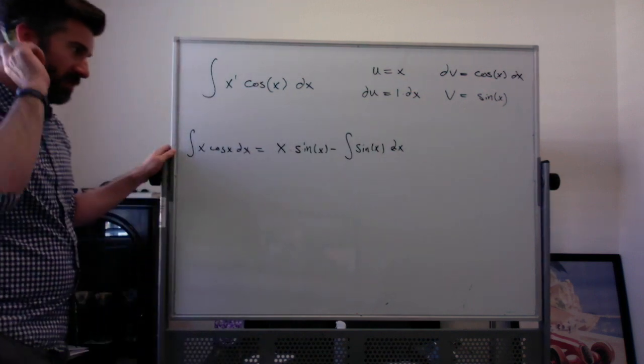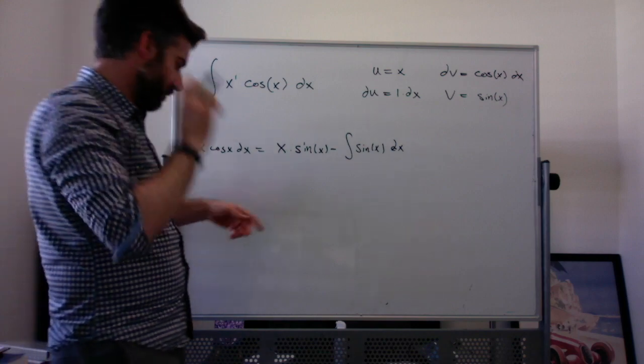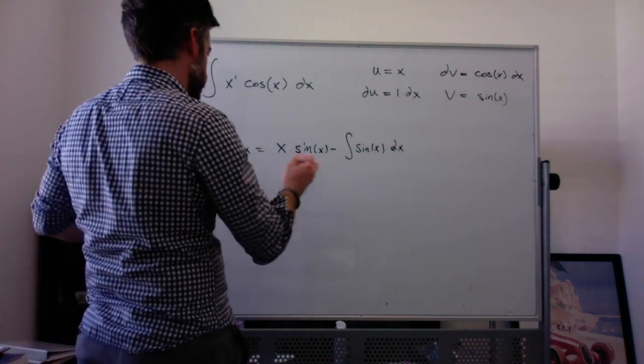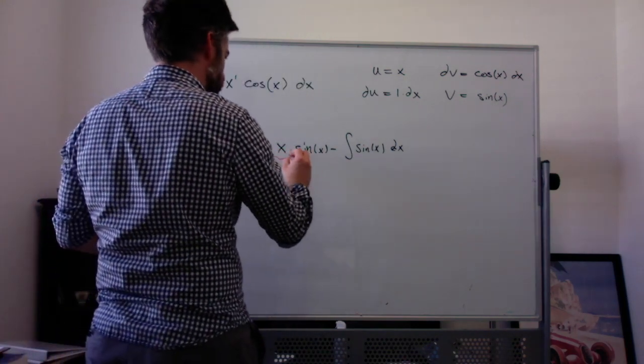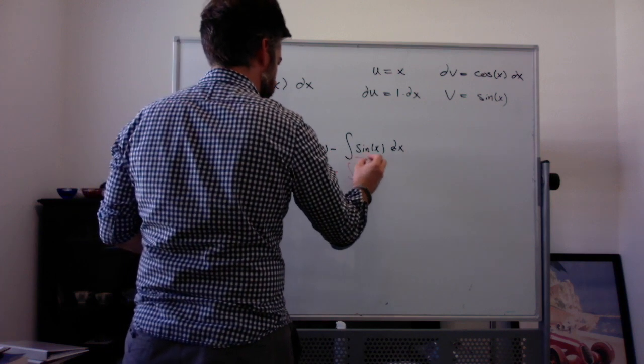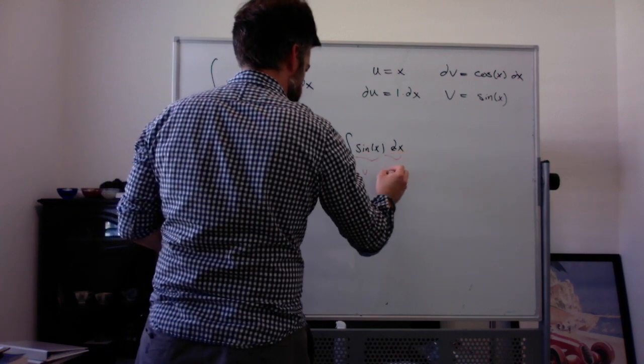So you're never actually writing the u as a v, you're just replacing what u and v are equal to. So just as a reminder, this is u, this is v, this is minus the integral of v du.